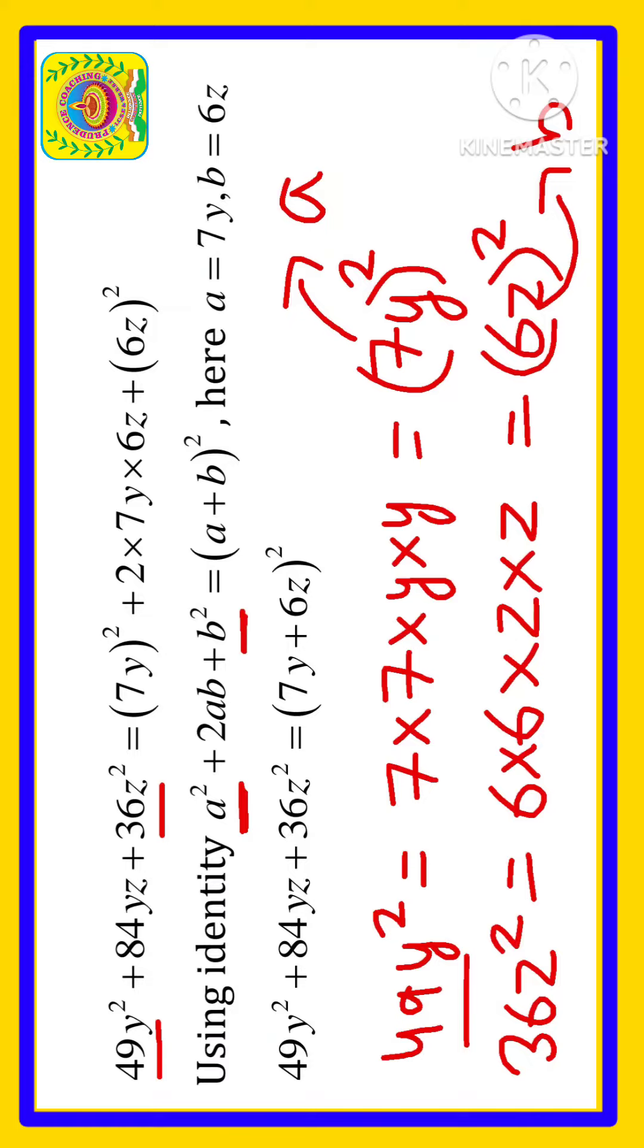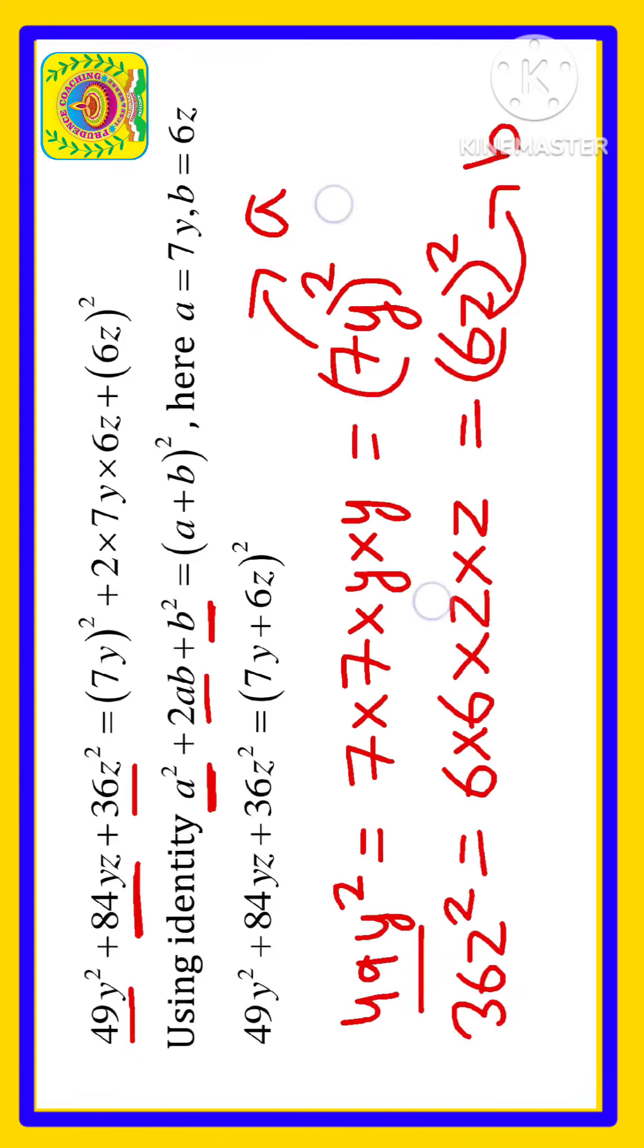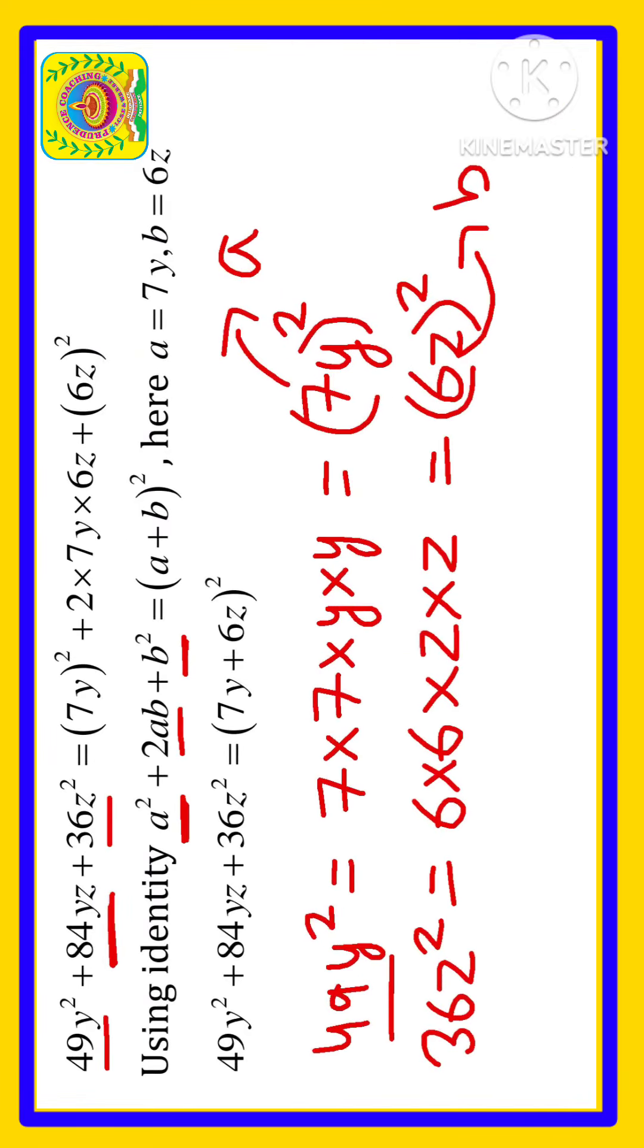Now let us see whether we can make the remaining thing as 2ab or not. So here we have 84yz which we need to write into 2ab form.